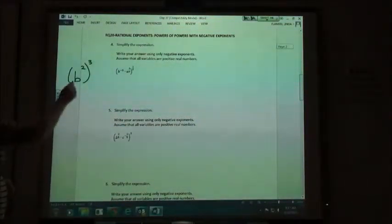When I raise to a power, I multiply this. So this would be b to the sixth power. b squared times b squared times b squared is b to the sixth.